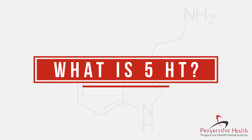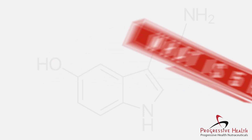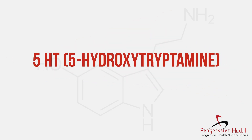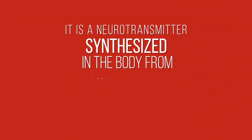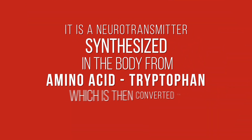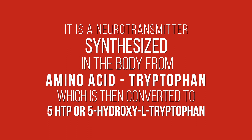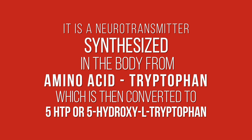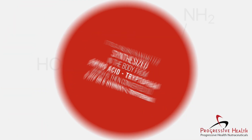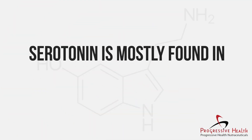What is 5-HT? 5-HT, or 5-hydroxytryptamine, is also known as serotonin. It is a neurotransmitter synthesized in the body from the amino acid tryptophan, which is then converted to 5-HTP, or 5-hydroxy-L-tryptophan.